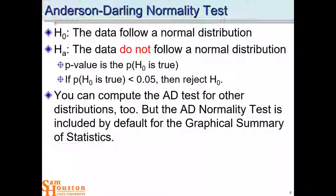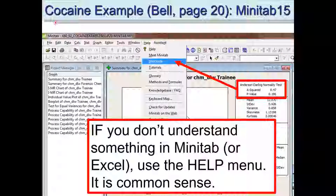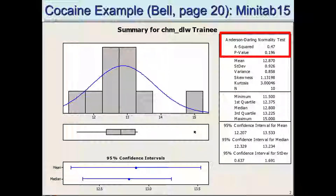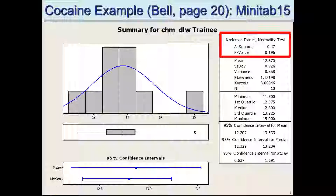The alternative hypothesis is that the data do not follow a normal distribution. The P-value is the probability that H₀ is true — the probability that the data is normally distributed. You can compute this AD test for other distributions too, but we typically use a normal distribution. For the trainee's data, the P-value is 0.196, so we fail to reject the null hypothesis because it's not less than 0.05. We're not saying it is normally distributed, but we fail to say it's not.